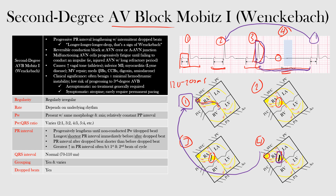One way to remember this is the mnemonic: longer, longer, longer, drop — that is a sign of Wenckebach. The PR interval keeps getting longer and then eventually drops, so just think of the PR interval getting longer as one of the key signs of Wenckebach.